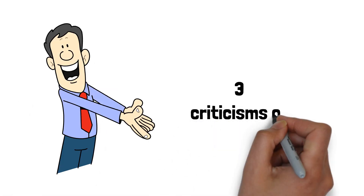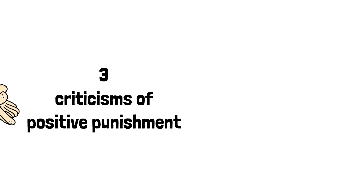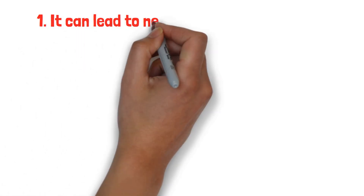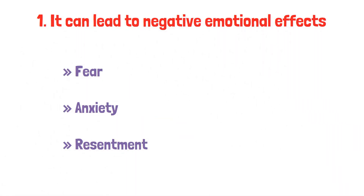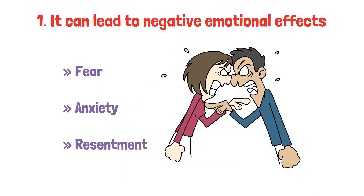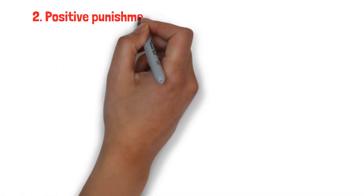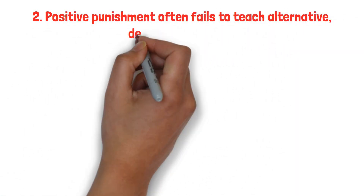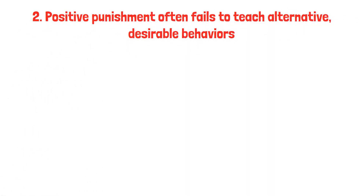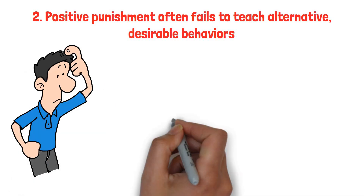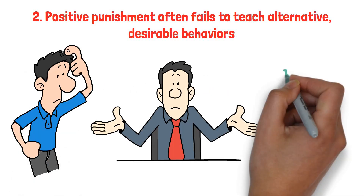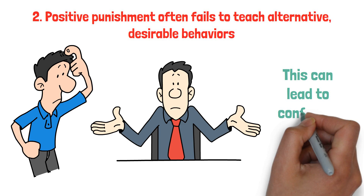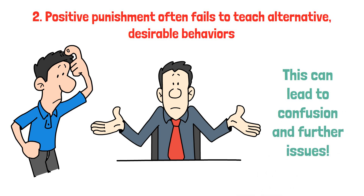Now let's explore three criticisms of positive punishment. First, it can lead to negative emotional effects such as fear, anxiety, and resentment. These emotions can damage relationships and create a hostile environment. Second, positive punishment often fails to teach alternative desirable behaviors. While it may stop a behavior, it does not provide guidance on what the individual should do instead, which can lead to confusion and further issues.